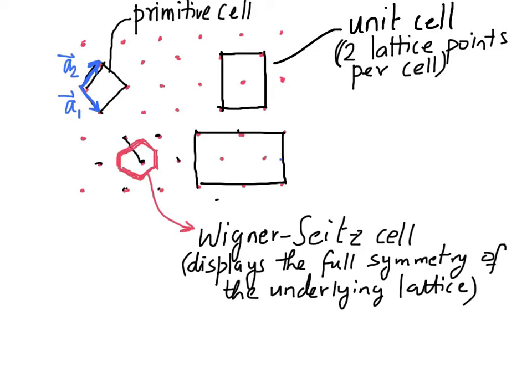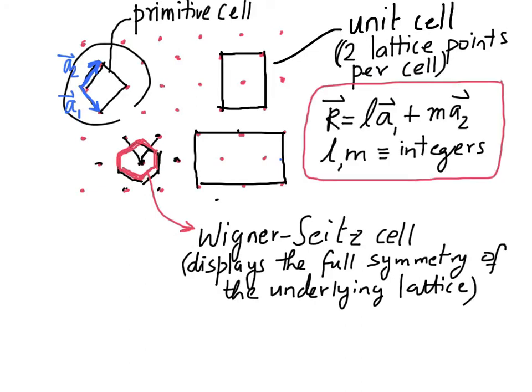Two important observations: all the lattice points are equivalent, and given any reference lattice point, we can reach any other lattice point through a vector R which is a linear combination of the two unit vectors A1 and A2. R is a new vector which can connect any lattice point to any other lattice point, where L and M are integers and A1 and A2 are the unit cell vectors.